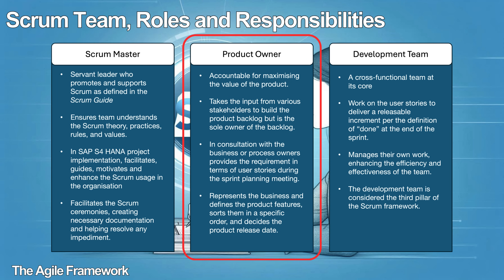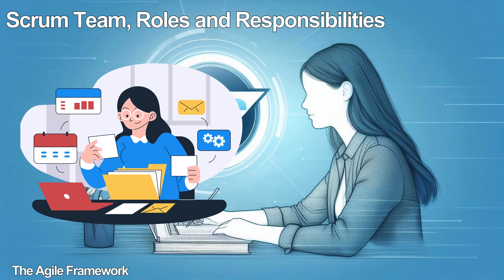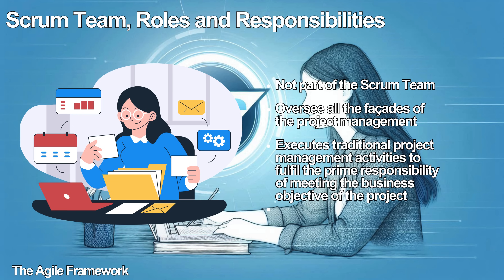By definition, a product owner represents the business and defines the product features, sorts them in a specific order, and decides the product release date. The development team is a cross-functional team that consists of professionals who work on the user stories to deliver a releasable increment per the definition of done at the end of the sprint. The development team is a self-organizing team who manages their own work, enhancing the efficiency and effectiveness of the team. The development team is considered the third pillar of the Scrum framework. The project manager is not part of the Scrum team. In an SAP S/4HANA implementation project, the project manager will oversee all the facets of project management and fulfil the prime responsibility of meeting the business objective of the project within the defined constraints.